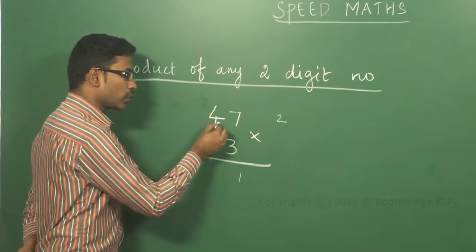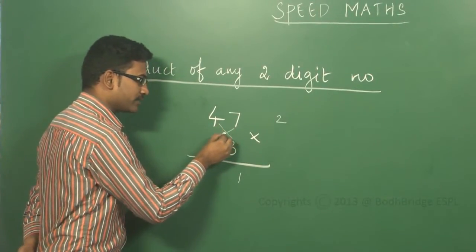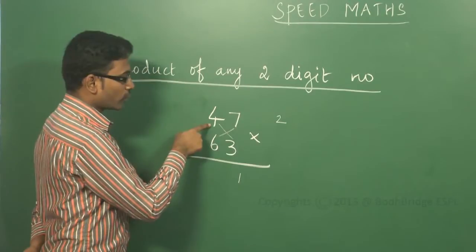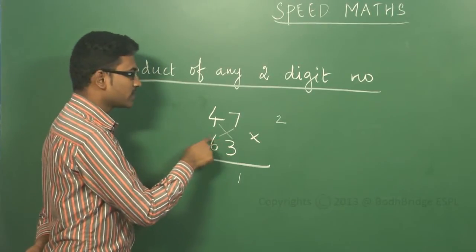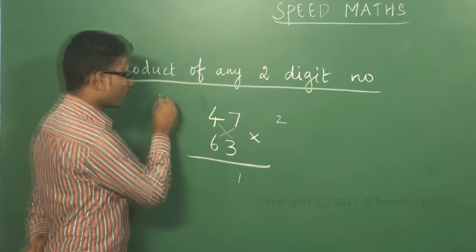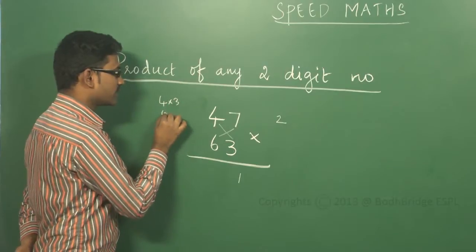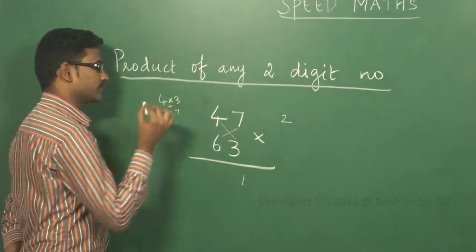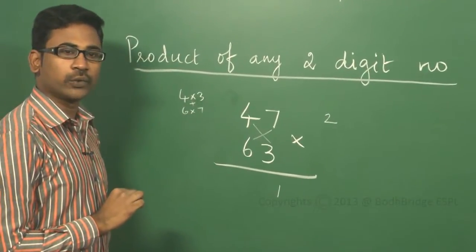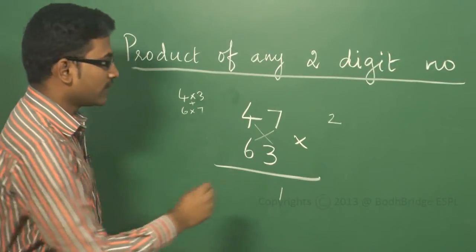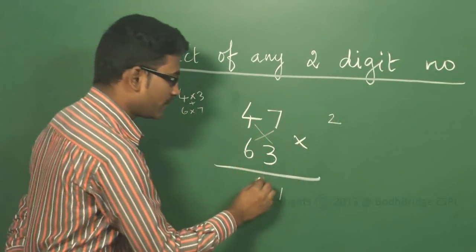The second step is to cross multiply and add: 4 into 3 is 12, and 6 into 7 is 42. So 12 plus 42 is 54. Then carry 2 is added, giving 56.